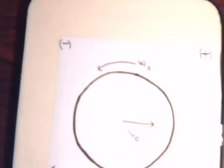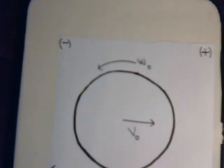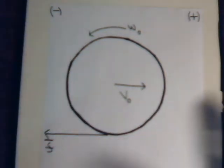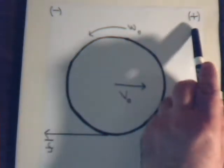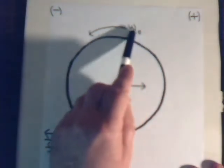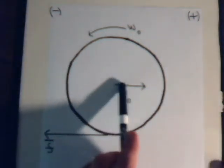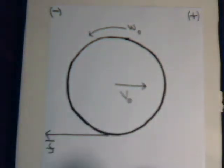We're continuing what we left off in the last video, where we considered a problem with a ball — it could be a billiard ball or a bowling ball — that has linear velocity in the positive direction to the right and a backwards angular velocity, or backspin. In this situation, the ball skids along, stops, and rolls backward in a pure roll situation.